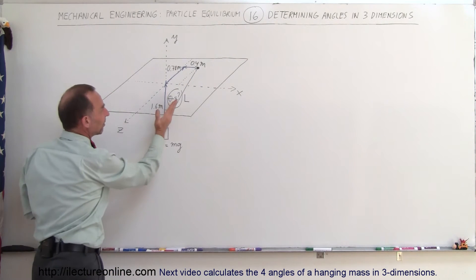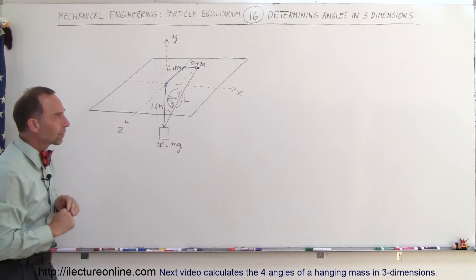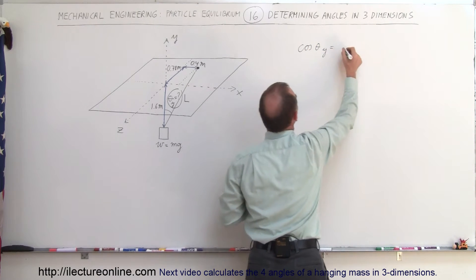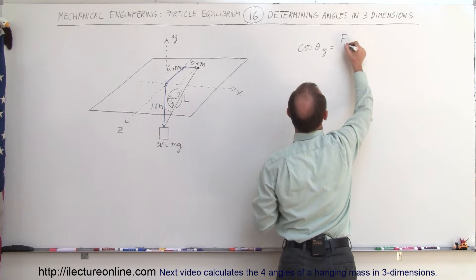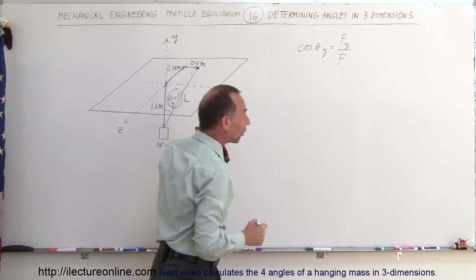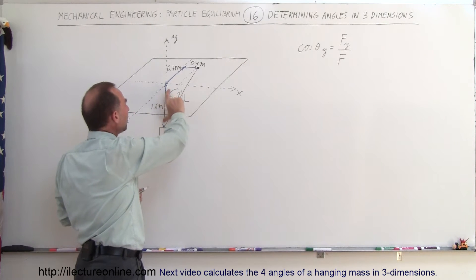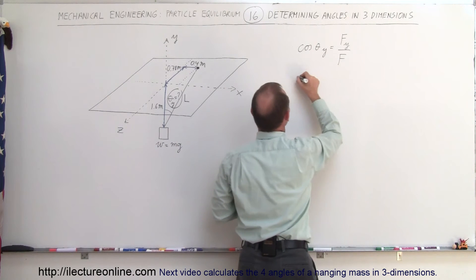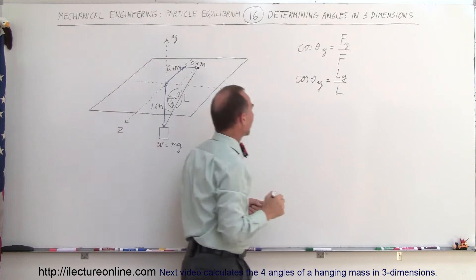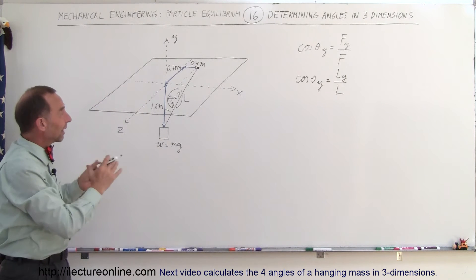So what is the angle between this rope and the vertical axis — the y direction? We're looking for theta sub y. Let's write down the direction cosine: the cosine of theta sub y is equal to the y component of the force divided by the magnitude of the force. In this case we can say that it's the y component of L divided by L, where L is the length of the string — the hypotenuse of that three-dimensional triangle.